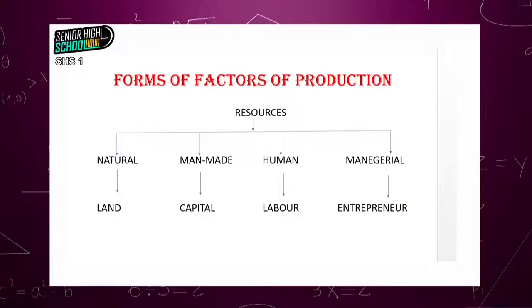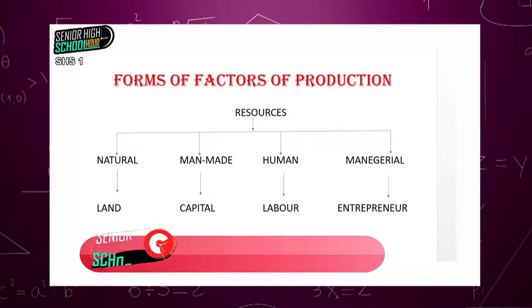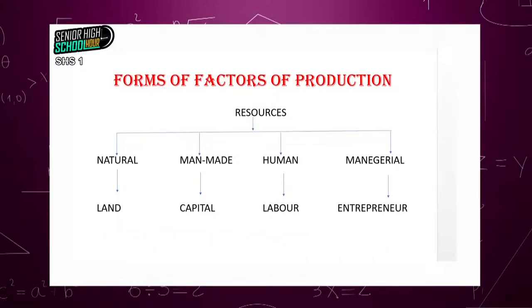Think about anything we use for the production of goods. When we talk of resources, they could be natural in nature. Some of the things we use for production are natural — like raw materials. Many of you like chocolate; what we use to produce chocolate is the cocoa bean, which comes from a natural source. The cocoa bean becomes a resource for the production of chocolate and it is natural.